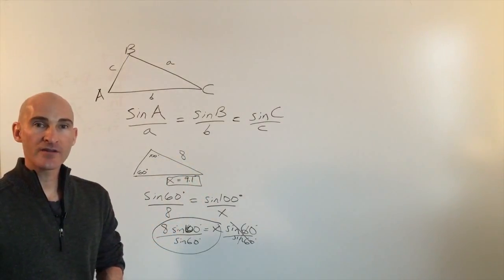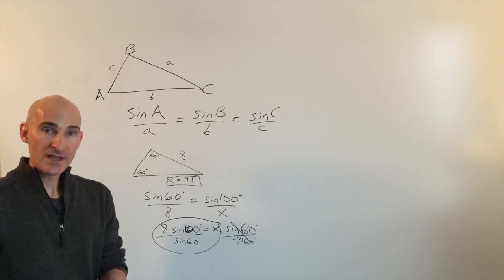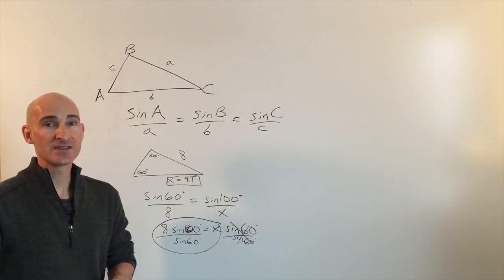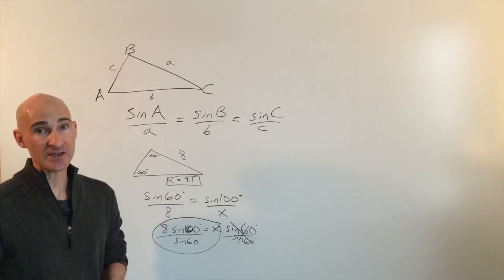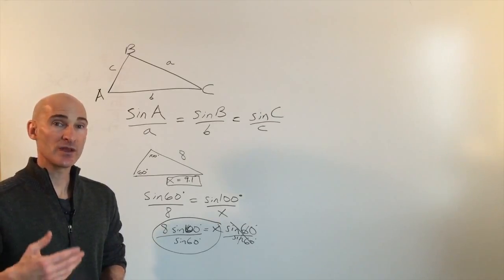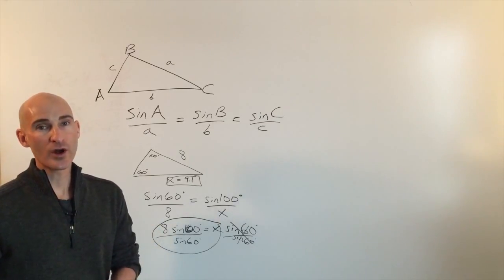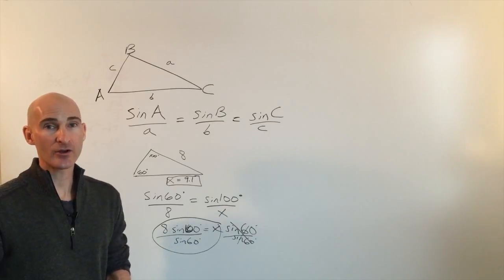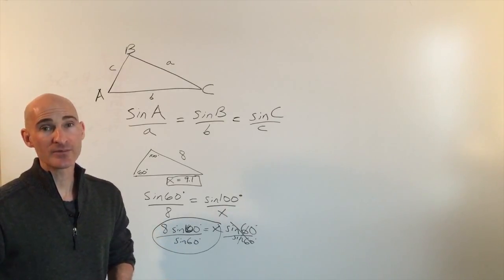So that's the law of sines. Now, what often confuses students is what they call the ambiguous case. This is where, given the information in the problem, there can be two triangles, one triangle, or even no triangle.